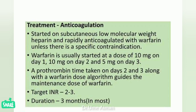DVT treatment with anticoagulation is started with subcutaneous low molecular weight heparin and rapidly transitioned to warfarin unless there is a specific contraindication. Warfarin is usually started at 10 mg on day one, 10 mg on day two, and 5 mg on day three. Prothrombin time (PT) is taken on days two and three to guide the maintenance dose. Target INR should be two to three, and duration of therapy is typically three months.